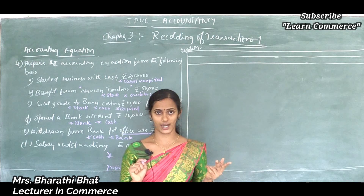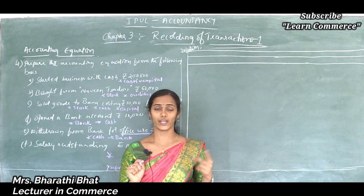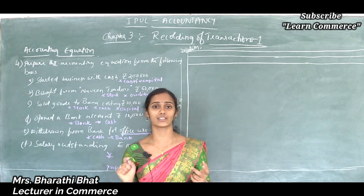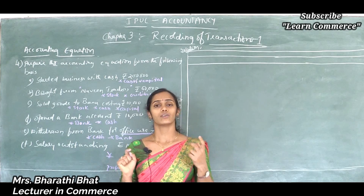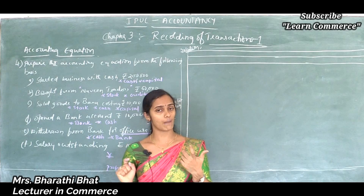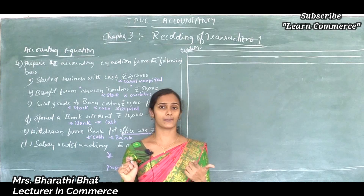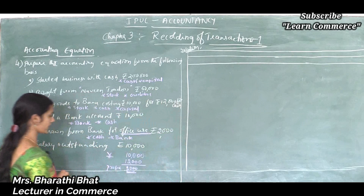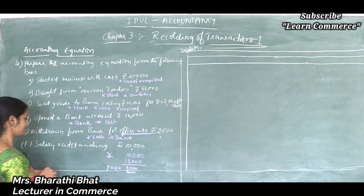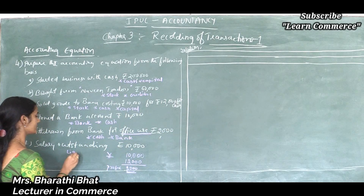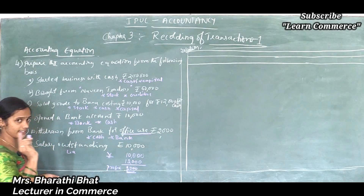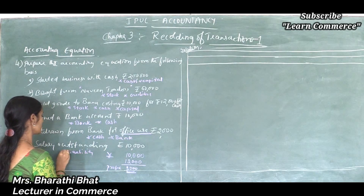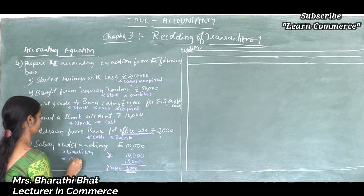For example, wages outstanding — you should treat this the same way. We have to deduct from capital and add to liability. So the two accounts affected are: one is liability, that is outstanding liability, and another one is capital.